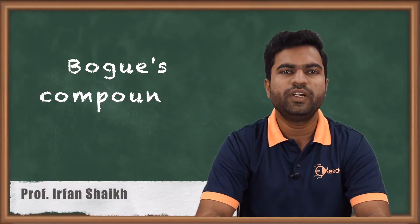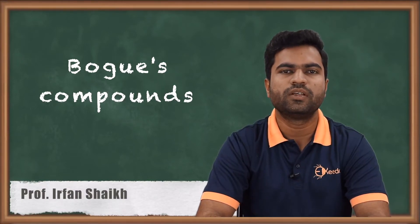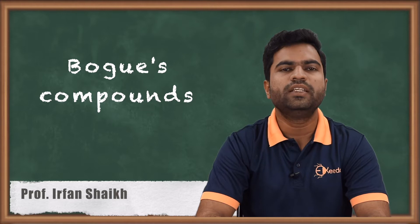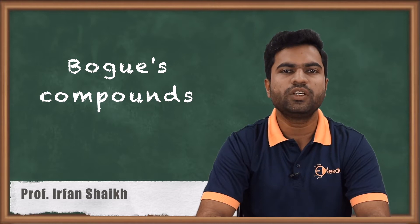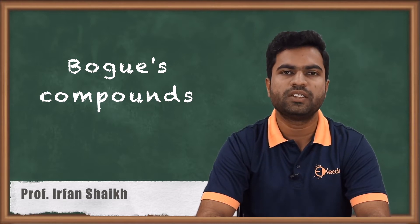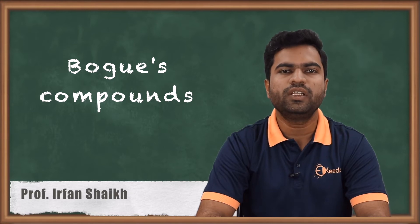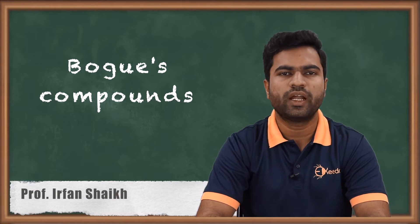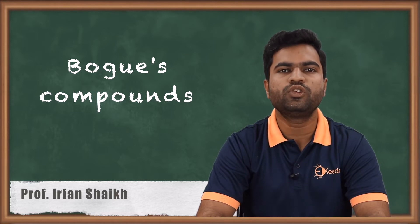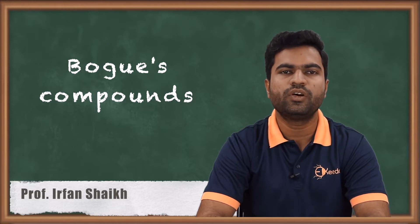Hello friends. In this video we will see the Bogue compounds. What are Bogue compounds? At the time of manufacturing of cement, the various constituents of cement such as lime, alumina, and silica react with each other and form complex compounds. These compounds are called Bogue compounds, named after R.H. Bogue who introduced them.